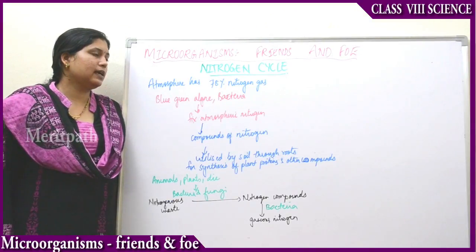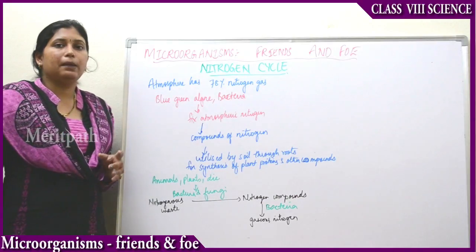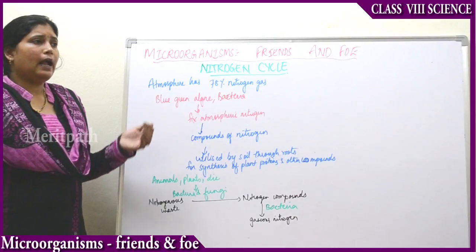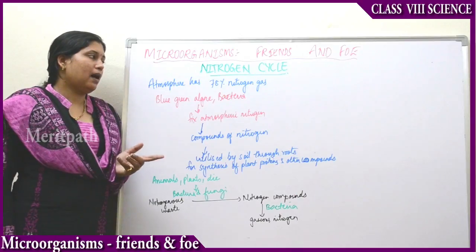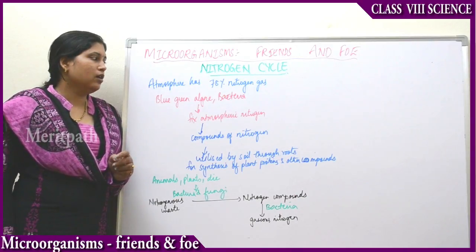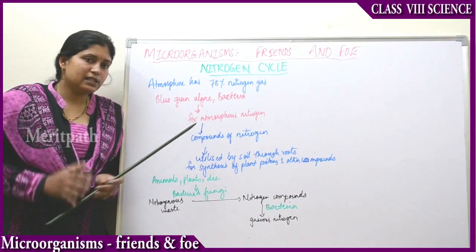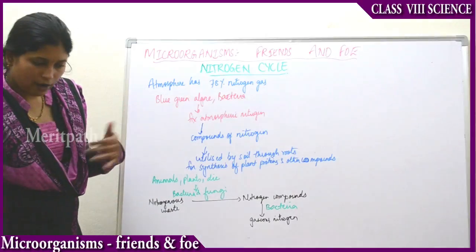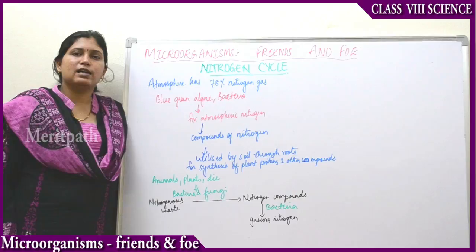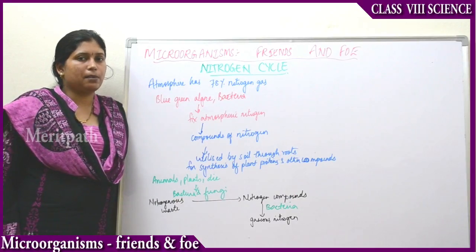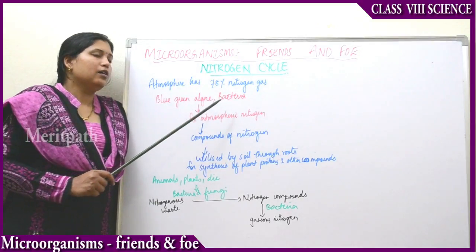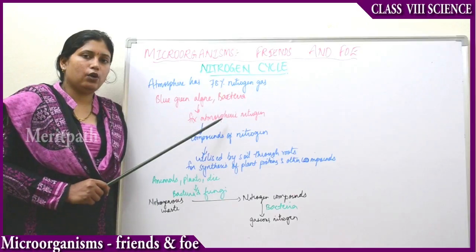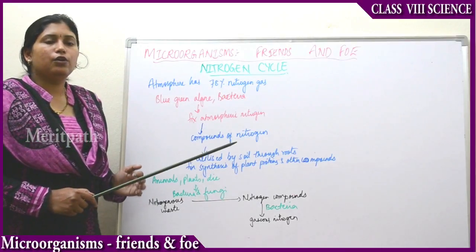Let's see about the nitrogen cycle. Atmospheric gas has about 78% total nitrogen content, and nitrogen is an important constituent as part of protein, nucleic acid, and chlorophyll. The roots cannot use the atmospheric nitrogen directly — it has to be converted into some other form. Blue-green algae and bacteria fix the atmospheric nitrogen and convert it into compounds of nitrogen so that plants can use them.